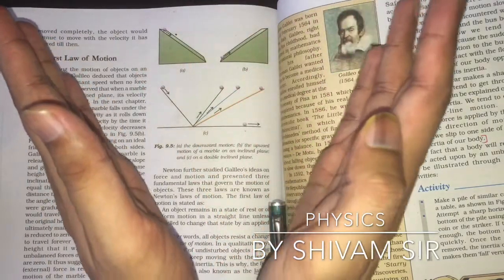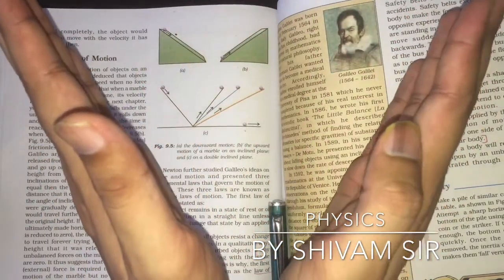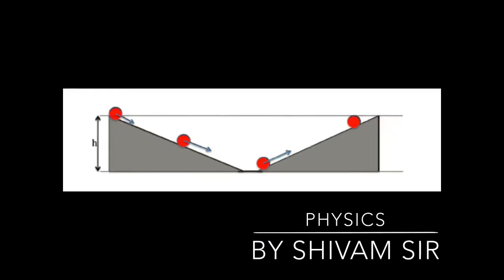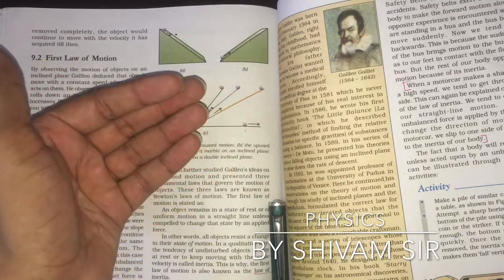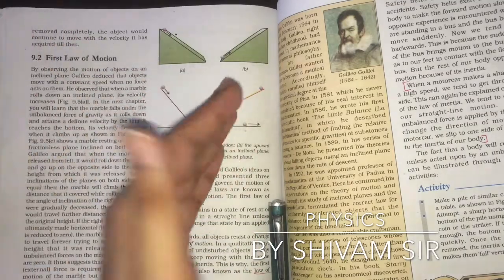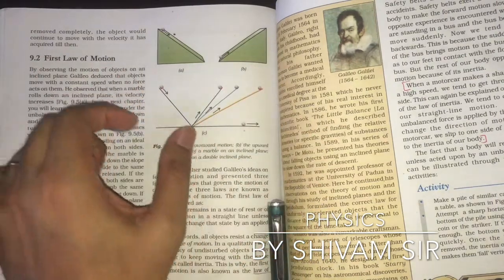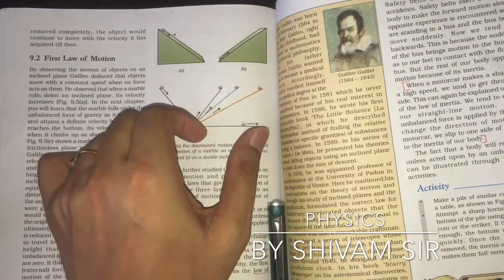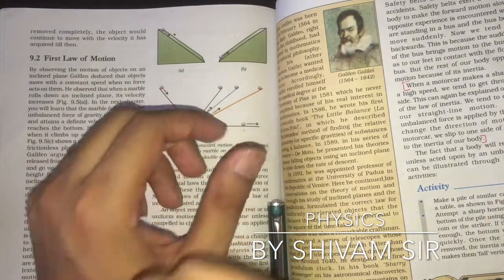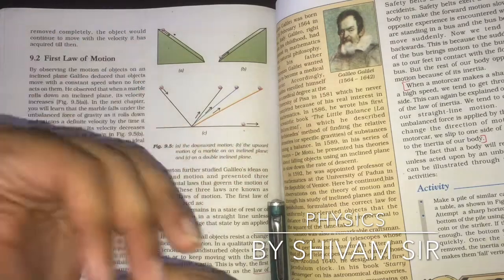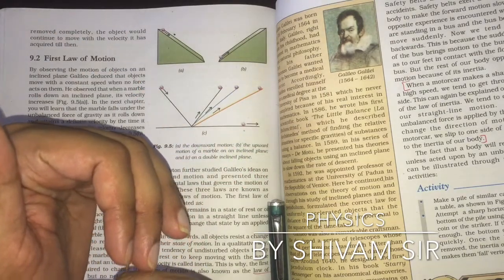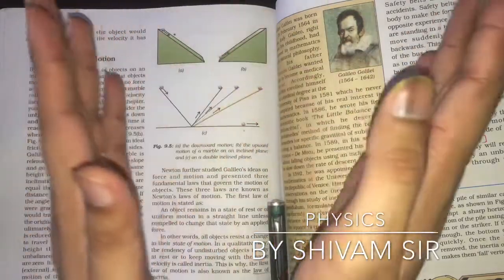His second observation: when both inclined planes have the same angle of inclination, the marble released from the left side travels the same distance on the right side as it was released from on the left. If it was released from a certain distance on the left, it travels that same distance on the right.